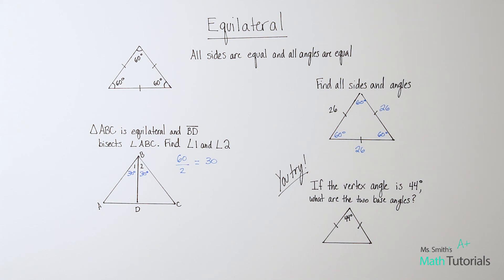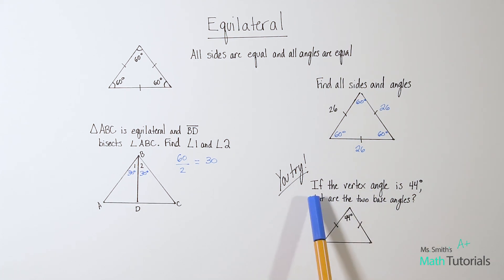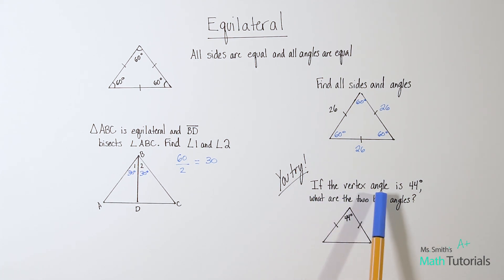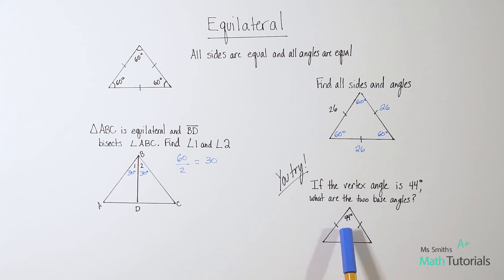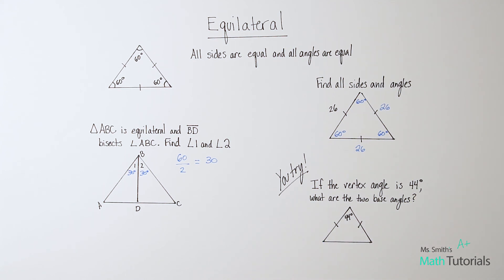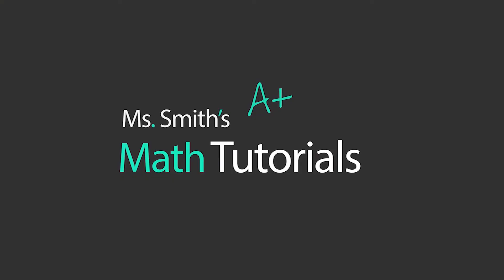Now I want you to try this one on your own: if the vertex angle of an isosceles triangle is 44 degrees, what are the two base angles? I will post the answer in the description of this video. This has been Ms. Smith's Math Tutorials.